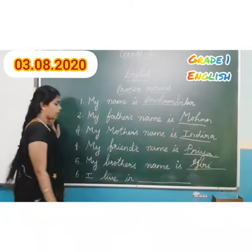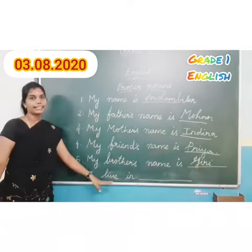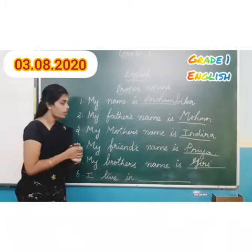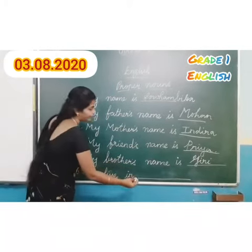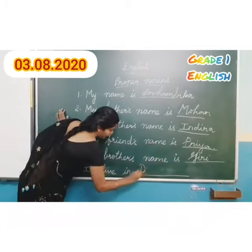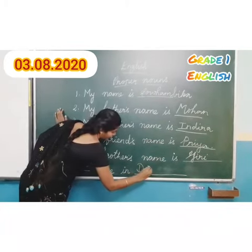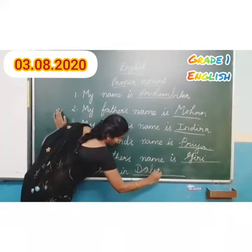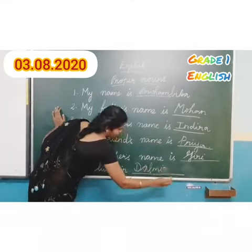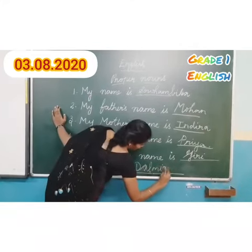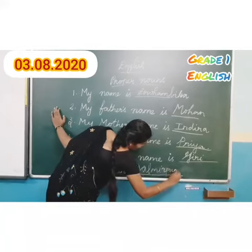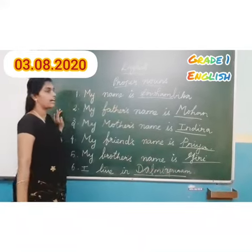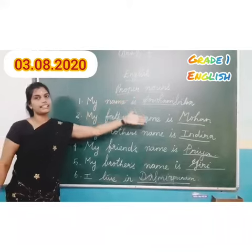Now, the last question. I live in — I live in Ganyabrub. So, I am going to write the name of the place here. I live in Ganyabrub: G-A-L-M-I-A-P-U-R-A-M. Ganyabrub.